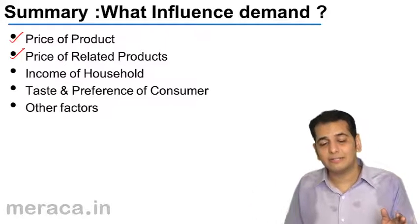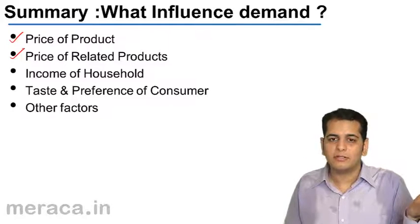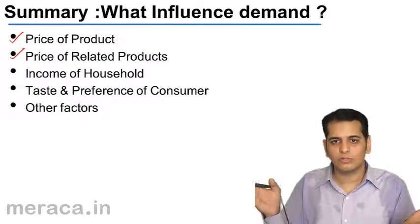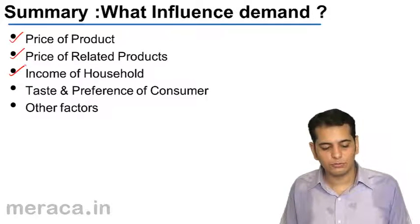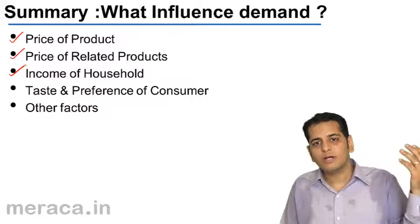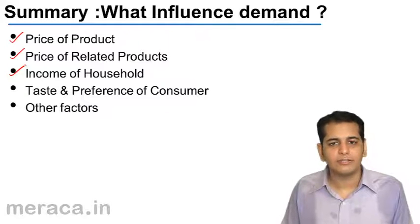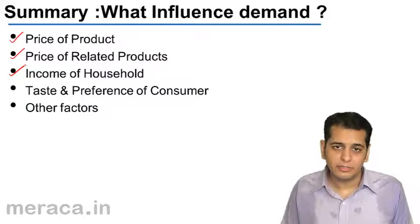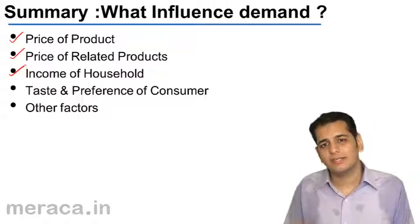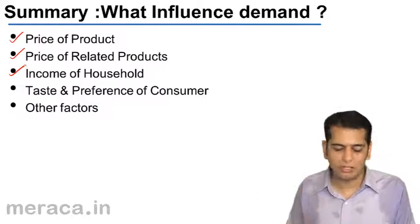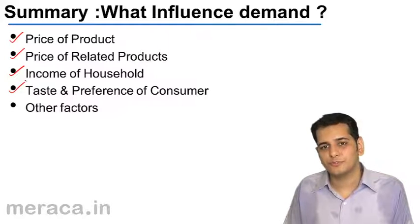The price of one good is directly related to the demand of the substitute — as the price of one good rises, the demand for the substitute also rises. Next, income of the household: as the income of the household rises, the consumer tends to spend more, so demand for that product increases, which means income is in direct relation to demand. We've also seen that taste, preferences, and habits of the consumer affect demand.